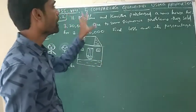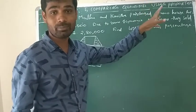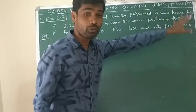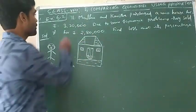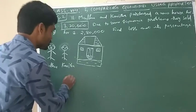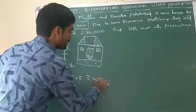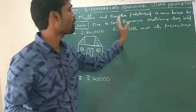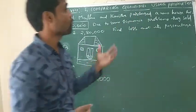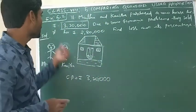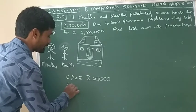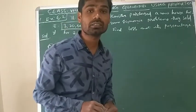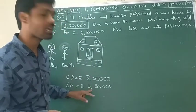Now 11th problem. Madhu and Kavita — it is about property, selling price and cost price, like real estate. Madhu and Kavita purchased a new house for rupees 3,20,000. So cost price equals 3,20,000 rupees. Due to some economic problems in their family, they sold it again. Selling price is rupees 2,80,000. Find the loss.